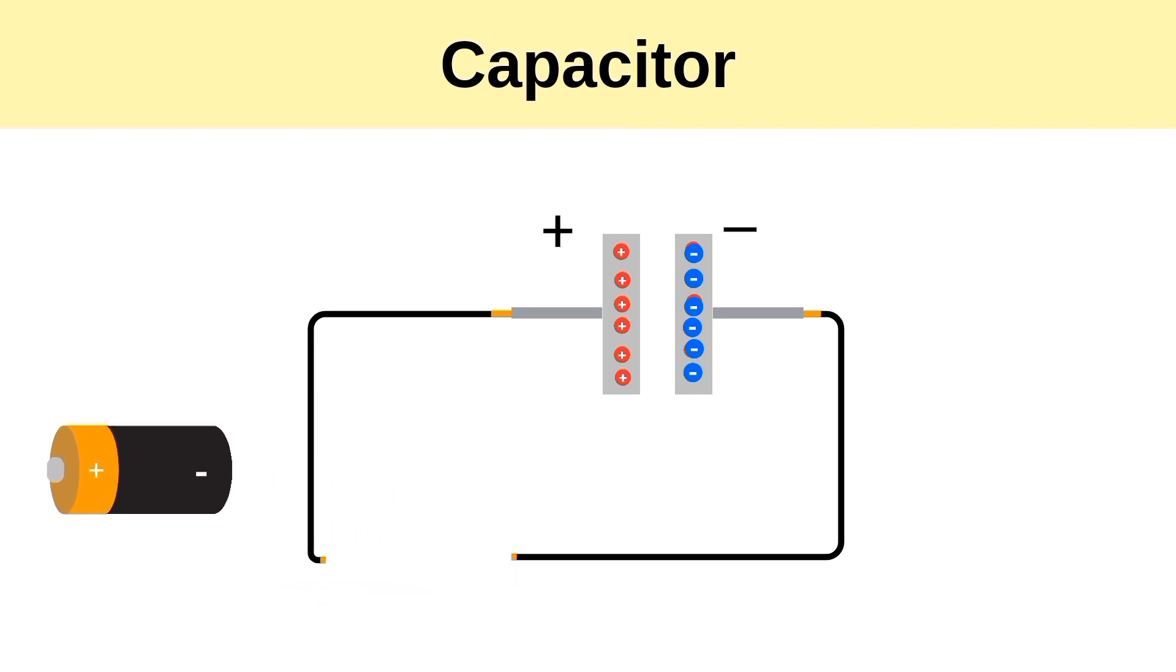This creates one plate positively charged and the other negatively charged, and due to electrostatic attraction, the electrons are held in place, and that's how the capacitor stores energy. To discharge the capacitor, we need to short two terminals with a resistor so that the electrons get a path through the resistor and the capacitor plate becomes neutral, meaning discharged. This is the working of a capacitor.